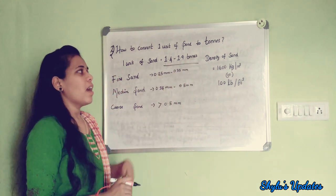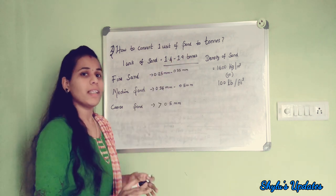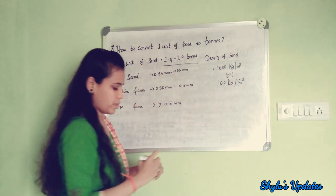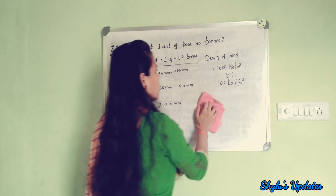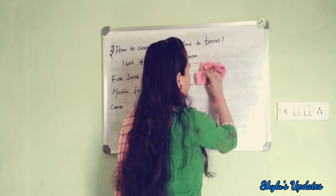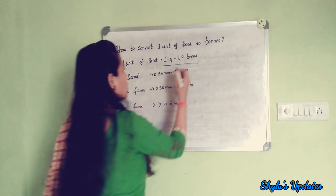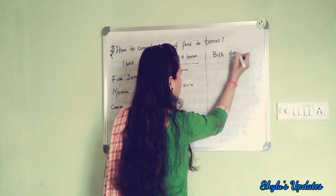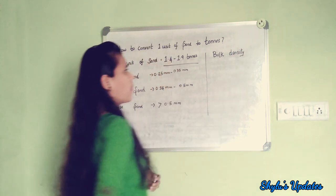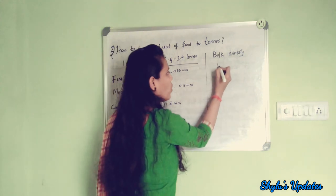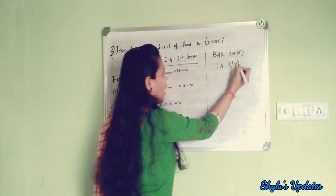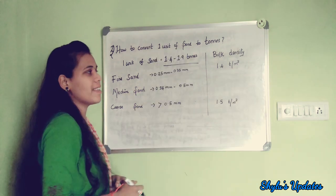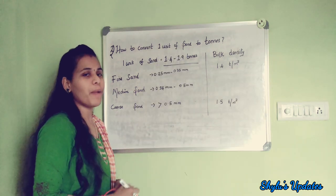Another reason for the 1.4 to 1.9 range is the bulk density of sand. The bulk density of fine sand is 1.4 ton per meter cube, and it can also be 1.5 ton per meter cube. This is also a reason why 1 unit of sand is equal to 1.4 to 1.9 tons.